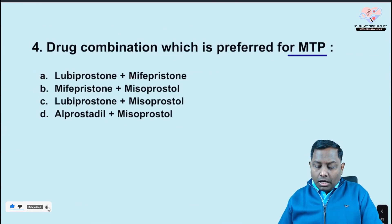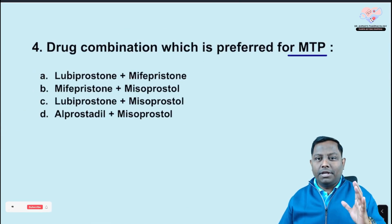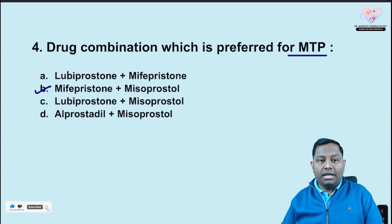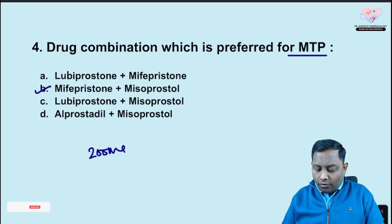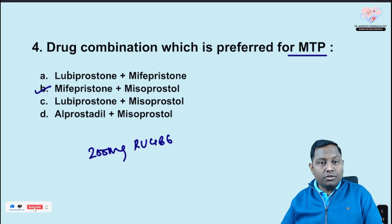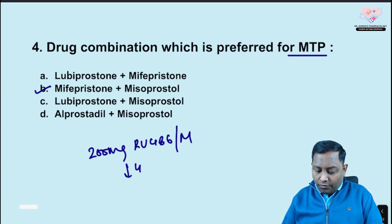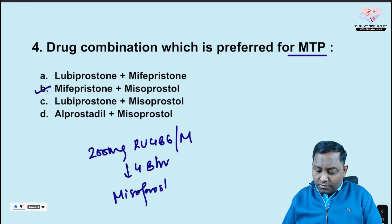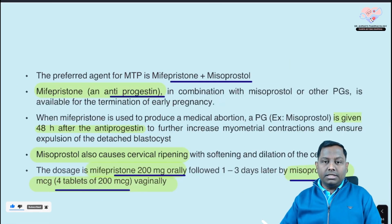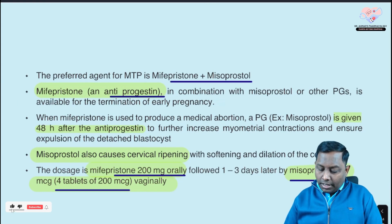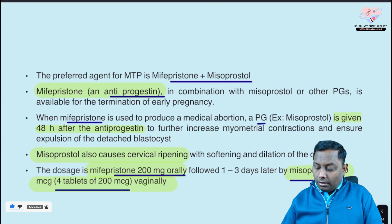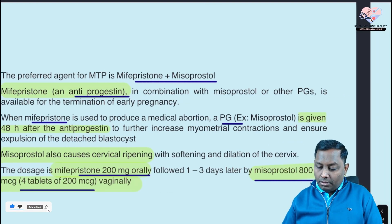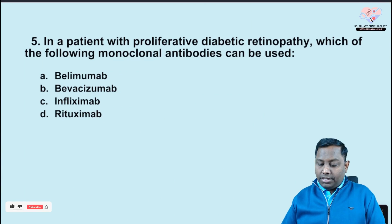Fourth question: the preferred drug combination for medical termination of pregnancy (MTP) — a frequently asked question. We give 200 mg of mifepristone (RU-486), an anti-progestin. After 48 hours, we give 800 micrograms of misoprostol, a prostaglandin. This regimen is confirmed in Goodman & Gilman and has been asked many times in exams.